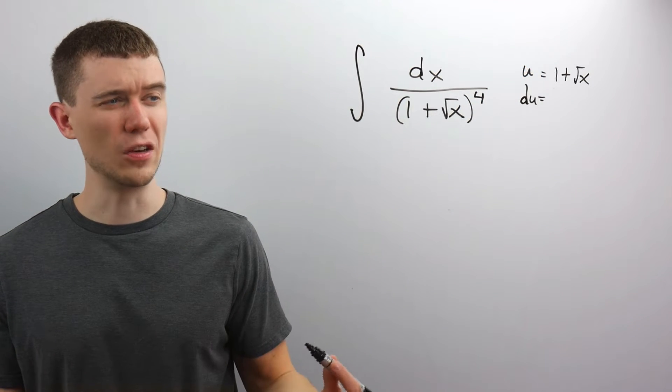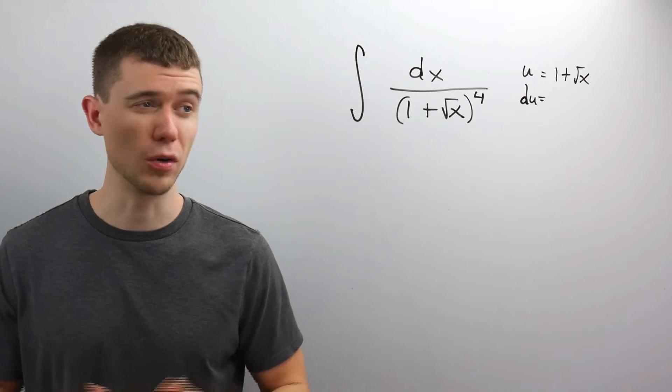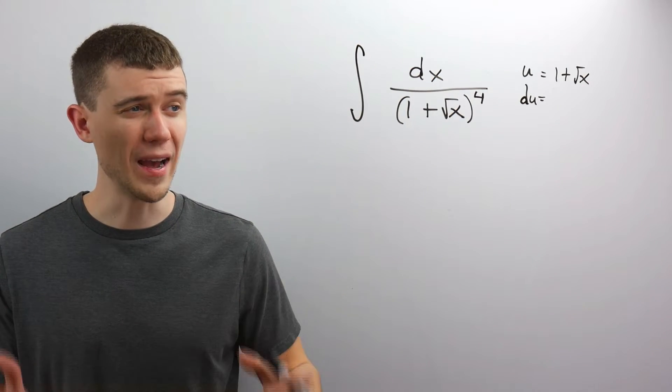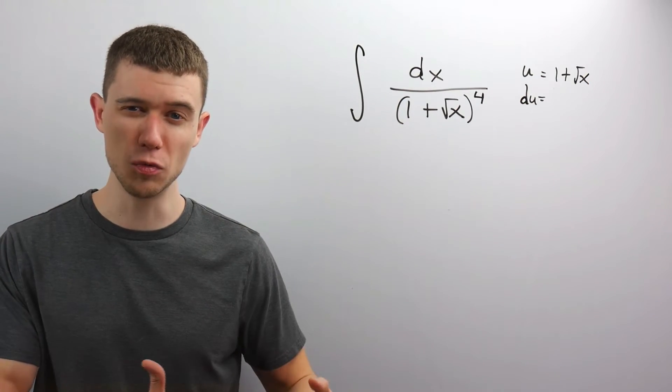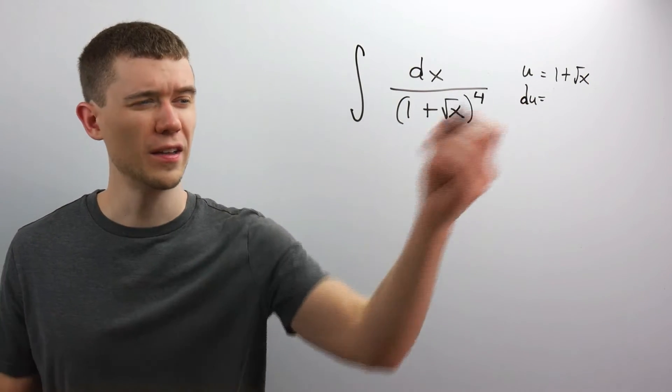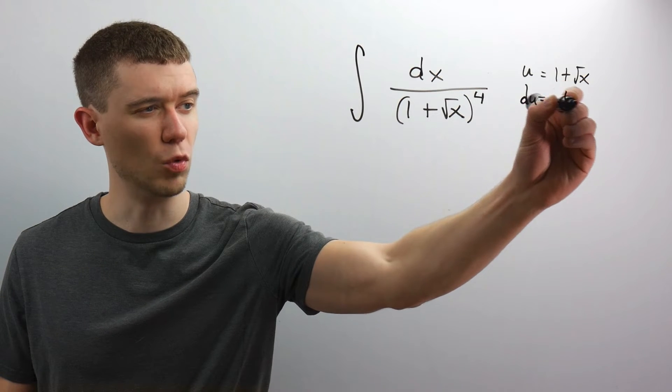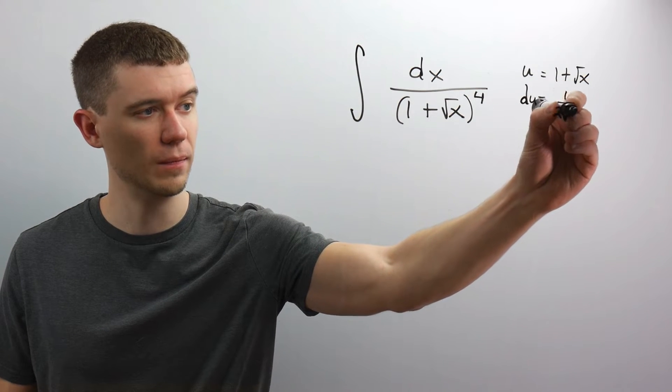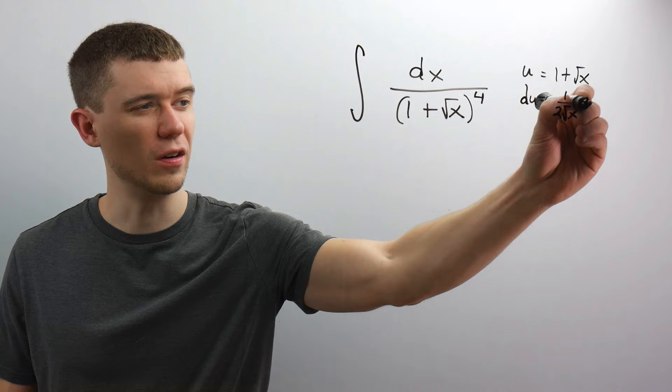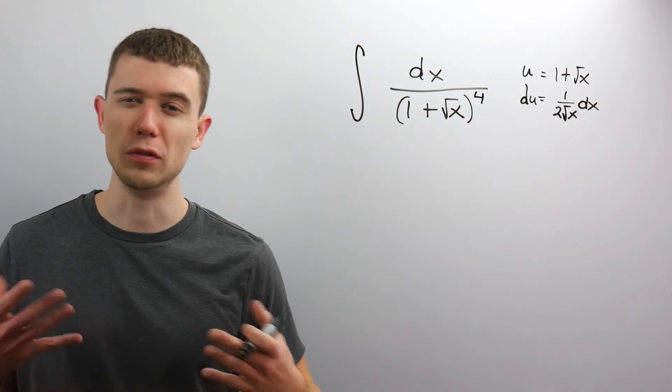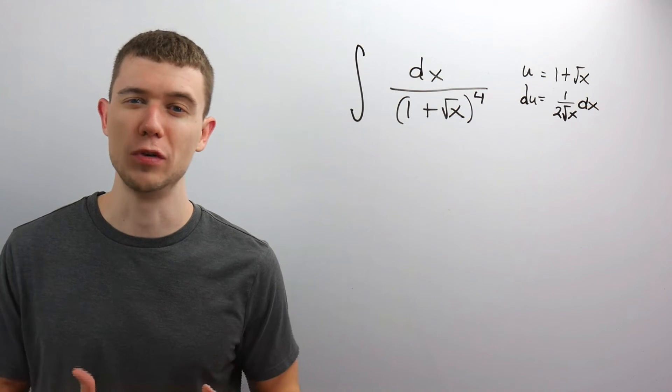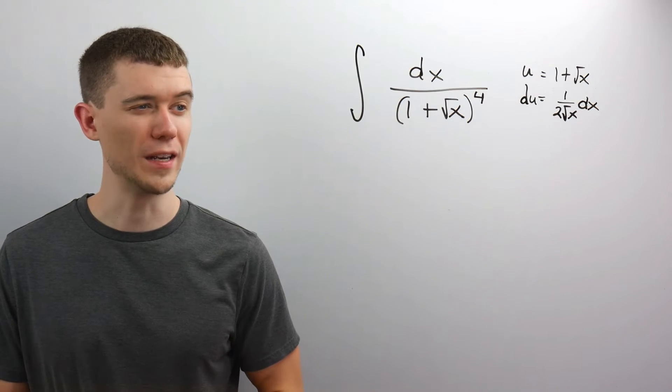This would make du, the derivative, well, the derivative of 1 is 0, and the derivative of root x, you could think of this as x to the 1 half power and use the chain rule. I prefer to remember the derivative of a square root is 1 over 2 times the square root. And I need to tack on dx when I'm doing this differential. So you'd get this same result if you use the power rule and then rewrote the answer using radical notation.